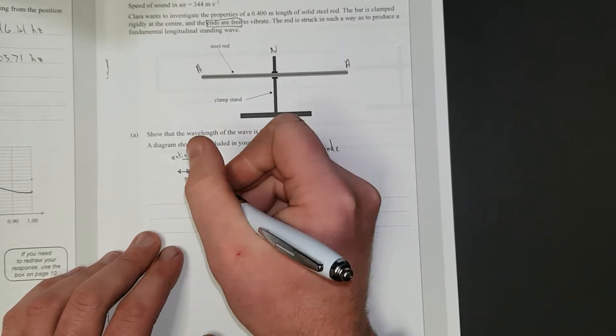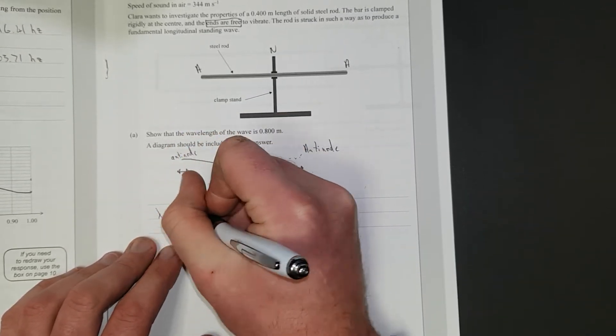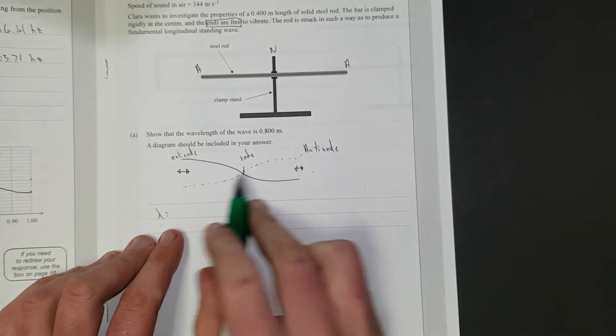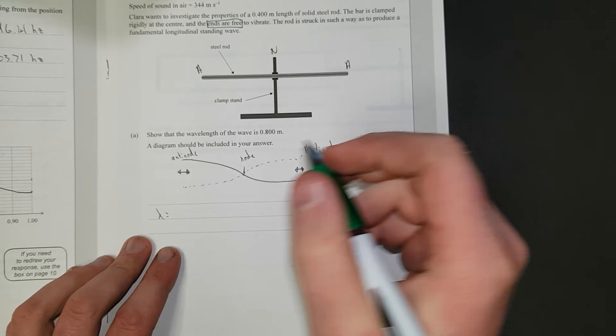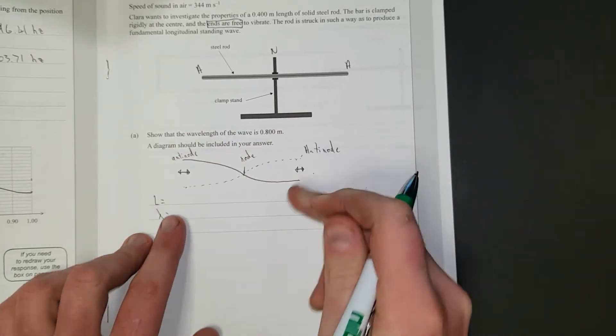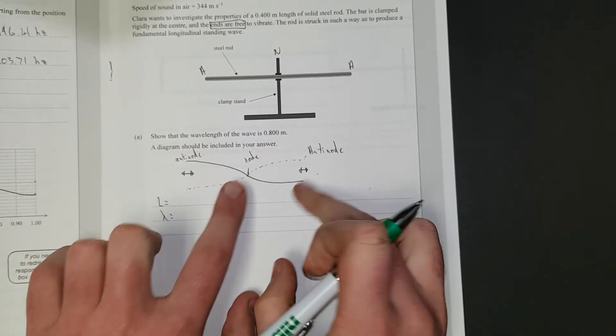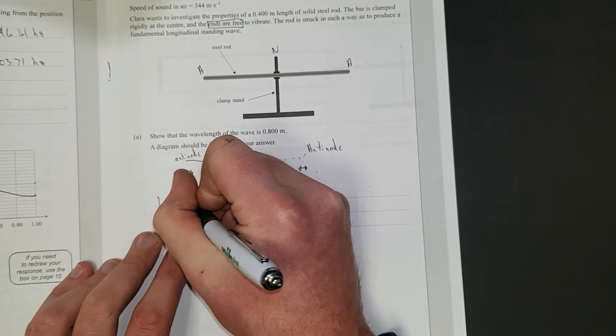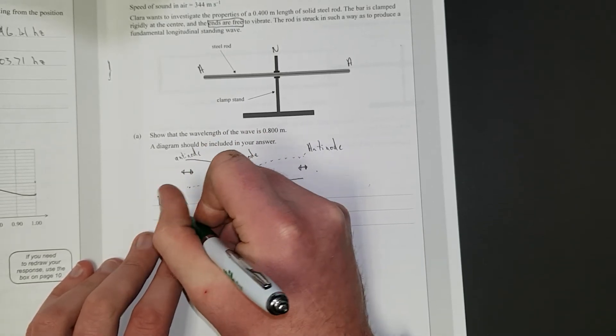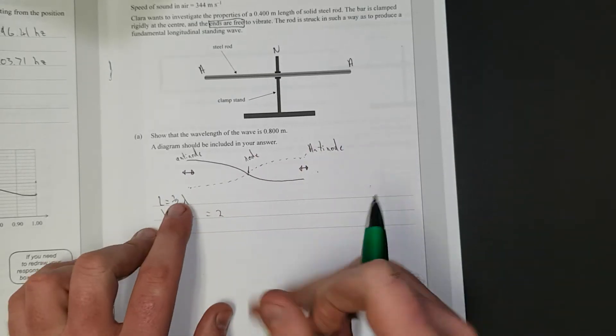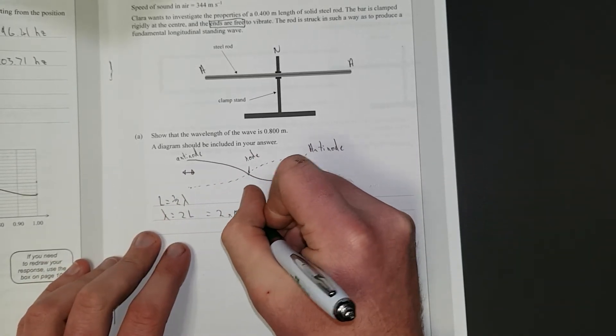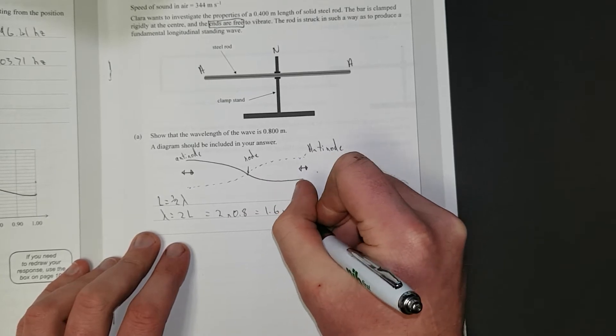Right. So, the wavelength is equal to... Well, the length is equal to half a wavelength. That's quarter of a wavelength, that's another quarter of a wavelength. Half a wavelength. In other words, the wavelength is equal to 2 times the length, which is equal to 2 times 0.8 meters equals 1.6 meters.